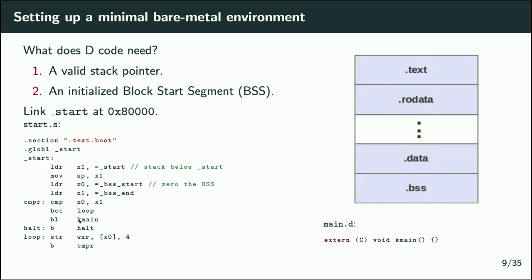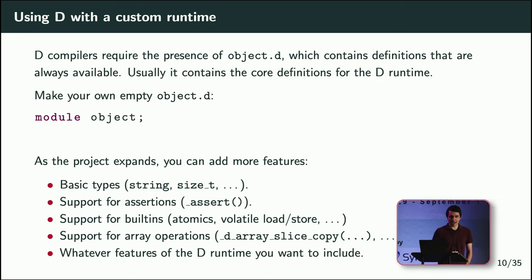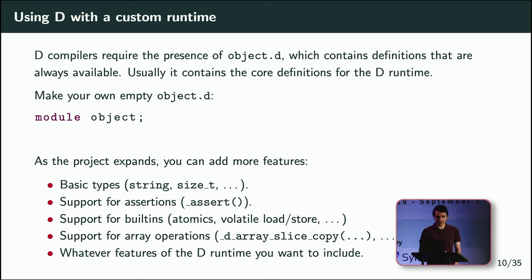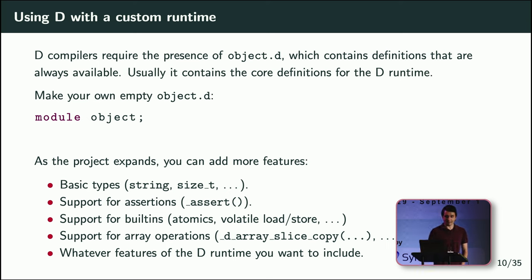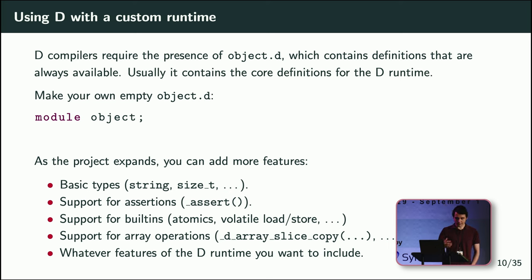Once you've set up the stack and zeroed the BSS, you can have a branch instruction that calls a main function written in D, and at that point you're safe to run your own D code. To actually compile D code for bare metal, D compilers expect an object.d file containing core runtime definitions. The simplest object.d can basically be empty — you won't have built-in D runtime features, but it will compile and you can use a restricted subset of the language. As your project grows, you can add support for basic types, assertions, and other built-ins.